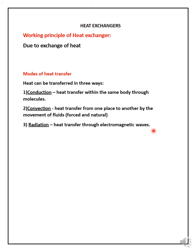Radiation is heat transfer through electromagnetic waves. You can see this from the sun — it supplies heat through radiation via light. So conduction, convection, and radiation all occur in a heat exchanger. Convection is the major part, then conduction, and a small amount of radiation — especially if the heat exchanger is outside or under light.